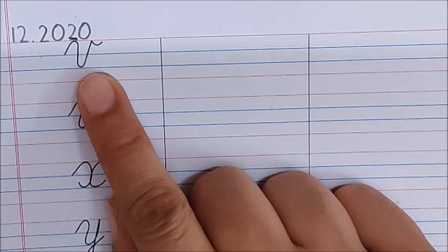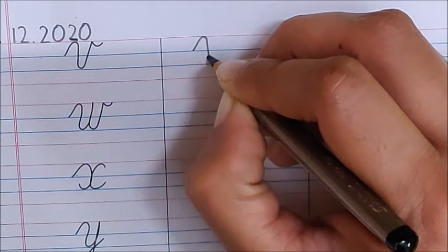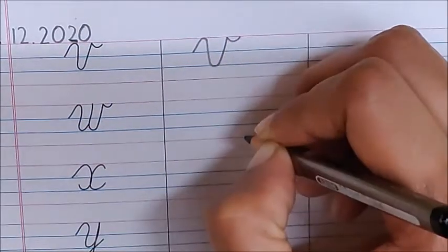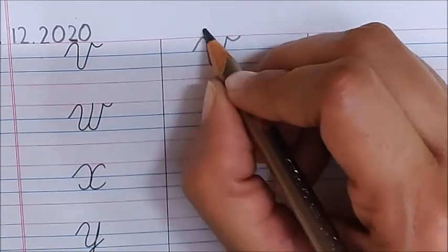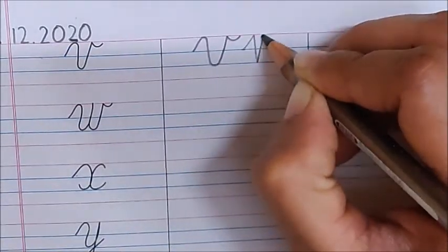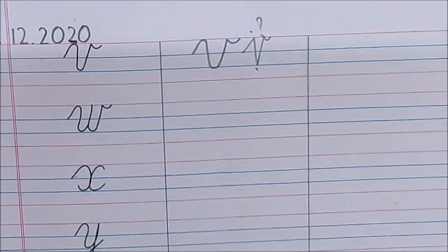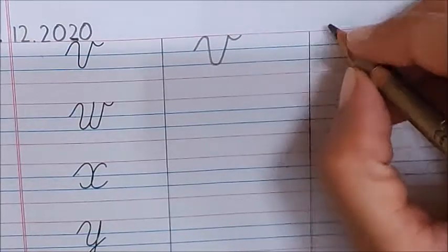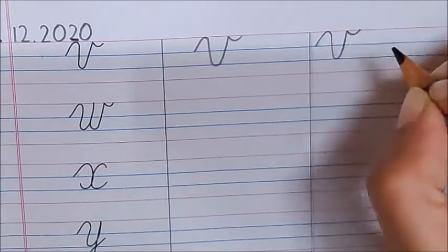This is letter V. How to write letter V? Go up, turn, come back, again turn, go up, and a small smiley. See, I have turned here — don't make it pointed. This should not be pointed and even this should not be pointed. If you make it like this, rub it and write letter V correctly. Slanting line, bend, go down, again bend, go up, and a small smiley. Letter V.